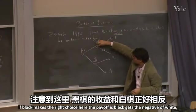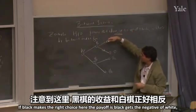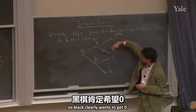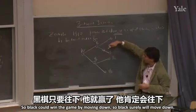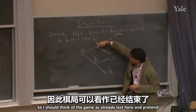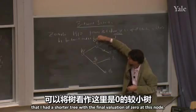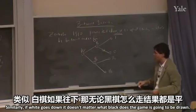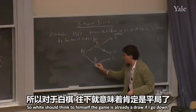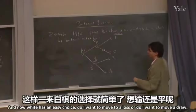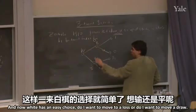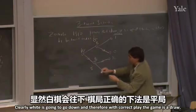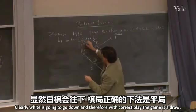If black makes the right choice, black could get negative 1 or could get 0, so black clearly wants 0. Black wins by moving down, so black surely will move down. So we think of the game as already lost here and pretend we have a shorter tree with a final valuation of 0 at this node. If white goes down, it doesn't matter what black does — the game is going to be drawn. So white thinks: the game is already a draw if I go down. White has an easy choice: move to a loss or move to a draw. White is going to go down, and with correct play the game is a draw.